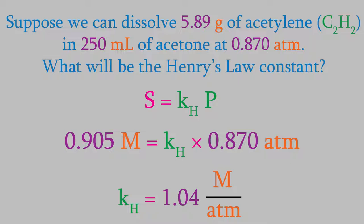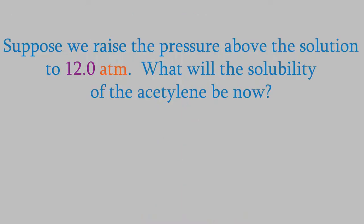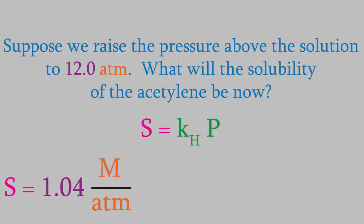Now that we know the Henry's Law constant, we can use it to predict the solubility of acetylene in acetone for any pressure. For example, suppose we raise the pressure of acetylene above the solution to 12.0 atm. What will be the solubility of the acetylene now? We'll use Henry's Law again to solve this one. This time, we're trying to find the solubility, so that's our unknown. We figured out the Henry's Law constant in the last problem and found out that it's 1.04 molars per atmosphere, and our pressure is 12.0 atm. When we solve the equation, we find out that the new solubility is 12.48 molar.